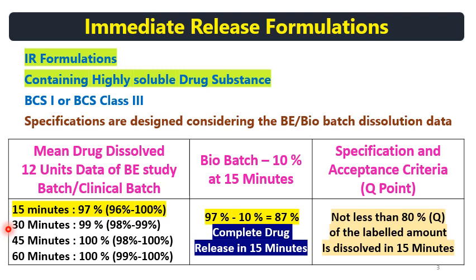At 30 minutes, 99%, and onwards it becomes similar. As general guidance, consider the 15-minute dissolution that is above 95%. Then 95% minus 10% gives you 85%, and that's why you can consider a specification for the Q point as not less than 80% of the labelled amount dissolved in 15 minutes. Q will be Q plus 5% at S1 stage, and equal to Q at S2 and S3 stage.